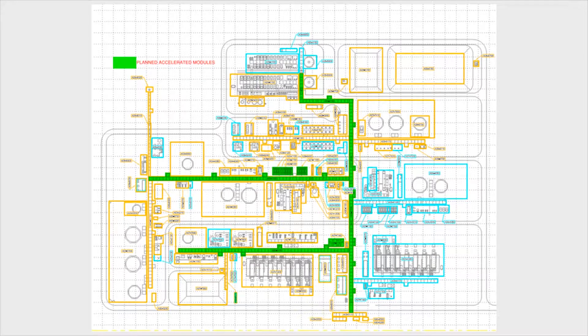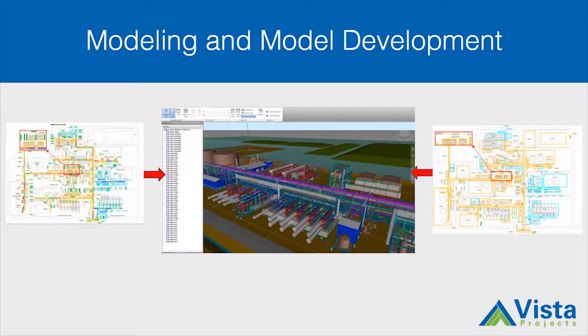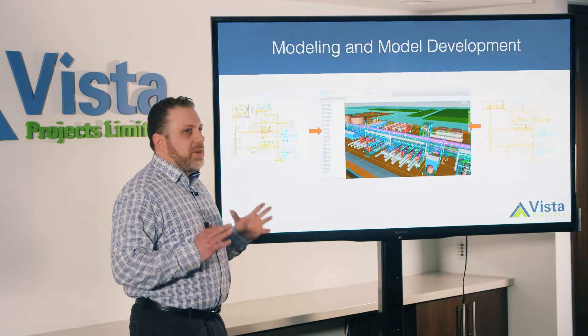Once our module key plans are complete, we then look for opportunities to accelerate modules. Vista likes to choose pipe racks to accelerate, and exchangers and simple equipment. The reason Vista likes to accelerate pipe rack modules is because we do not put instrumentation in those modules — it's just running pipe throughout the plant. We can deliver on these quickly and effectively to get the construction going. Model development does not start until we have the area key plans and the module key plans complete. From there, each discipline is given their hierarchy and all modeling takes place in there based on the area number and the module number, as a multi-discipline tool.